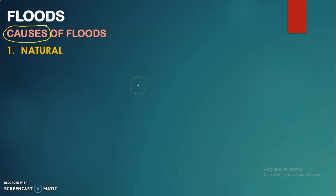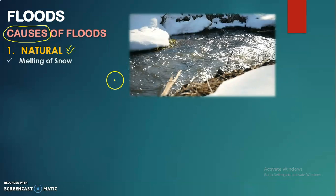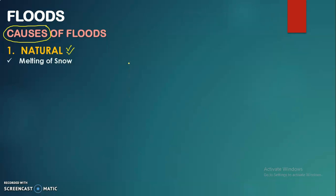The first natural cause of floods is the melting of snow. The highland and northern areas of Pakistan are covered with snow throughout winters. During summer, those glaciers melt, and that is the very first natural cause which mainly creates floods.